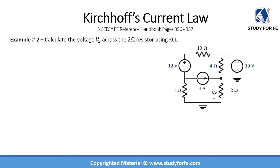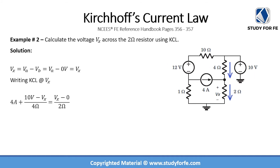Let us now take a look at this next example. This circuit looks slightly complicated but when you look at it systematically it's not that difficult. We are again asked to calculate voltage Vx across the 2 ohm resistor. In this case the problem statement indicates that one node is actually a grounded node. VX is the unknown voltage, and we have a current source and a voltage source to take care of. VX equals VA minus VB.